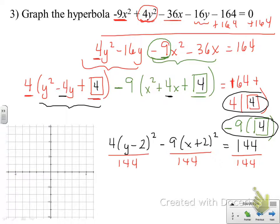And we'll do some reducing here. 144 and 4 reduce to (y minus 2) squared over 36. 9 will go into 144 sixteen times. So, my denominator here becomes a 16 under the x squared term. And my equation is going to be set equal to 1 now.